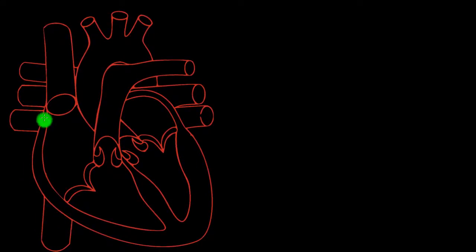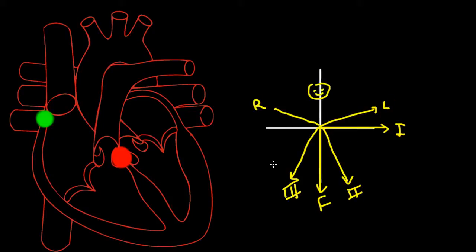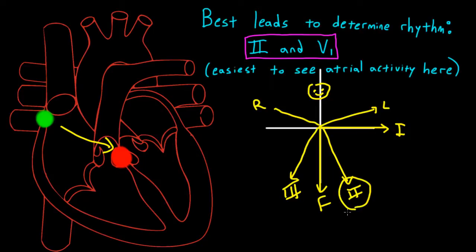To review briefly, the sinoatrial node, or the SA node, sits between the venous sinus and the right atrium, and the AV node, or the atrioventricular node, sits at the junction of the atria and the ventricles. Because of the positioning of the SA node and the AV node in the heart, the electrical activity aligns most accurately with lead 2 on the EKG, and anterior-posteriorly with leads V1 and V2. For this reason, leads 2 and V1 are the best leads on the EKG to determine the cause of the supraventricular tachycardia.